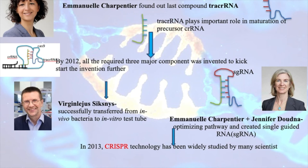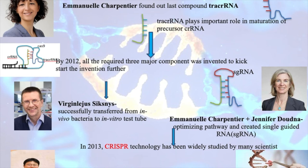By 2013, many scientists were working related to this CRISPR technology. The next scientist who opened the way in various application fields — especially in the human genome — was Feng Zhang. He was the first to attempt editing in the mammalian genome and was finally able to optimize a standard, efficient, and accurate manner to proceed. Because of his work, a lot of application-oriented work started related to CRISPR.